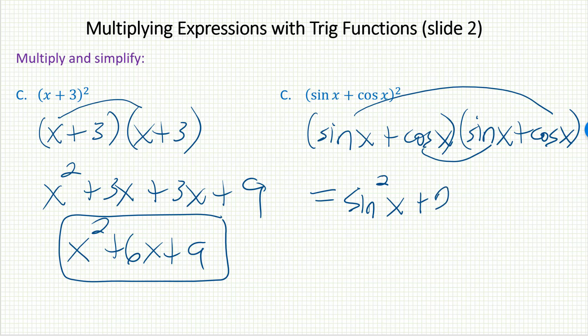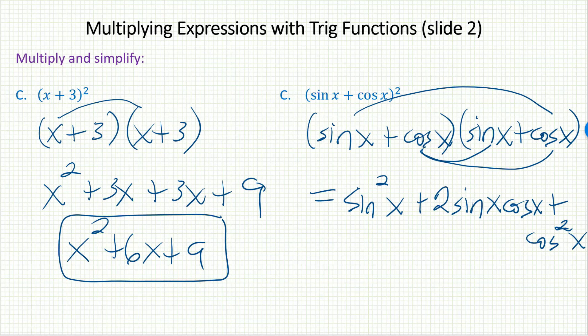So I know those are going to combine and give me two sine x, cosine x's. And then the last is cosine squared x. Can I simplify? Absolutely, because I have a sine squared x plus a cosine squared x. Sine squared x plus cosine squared x is 1.